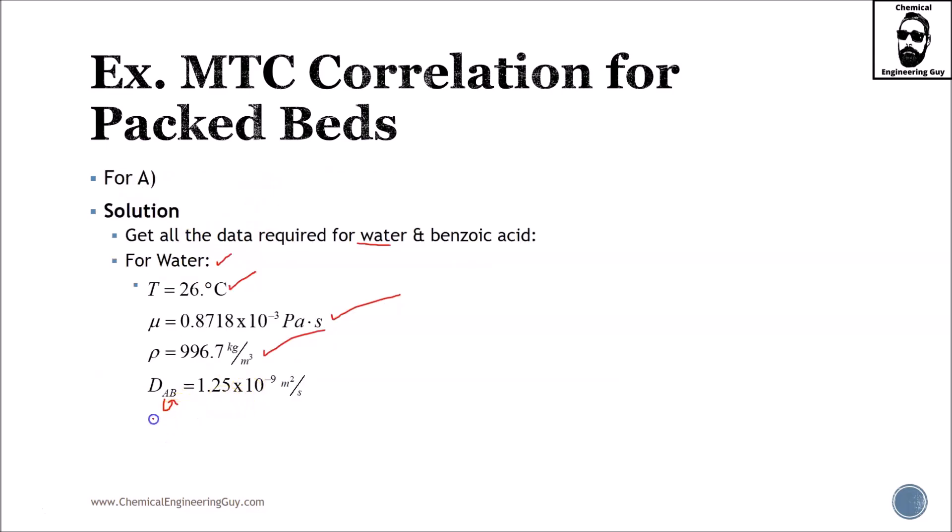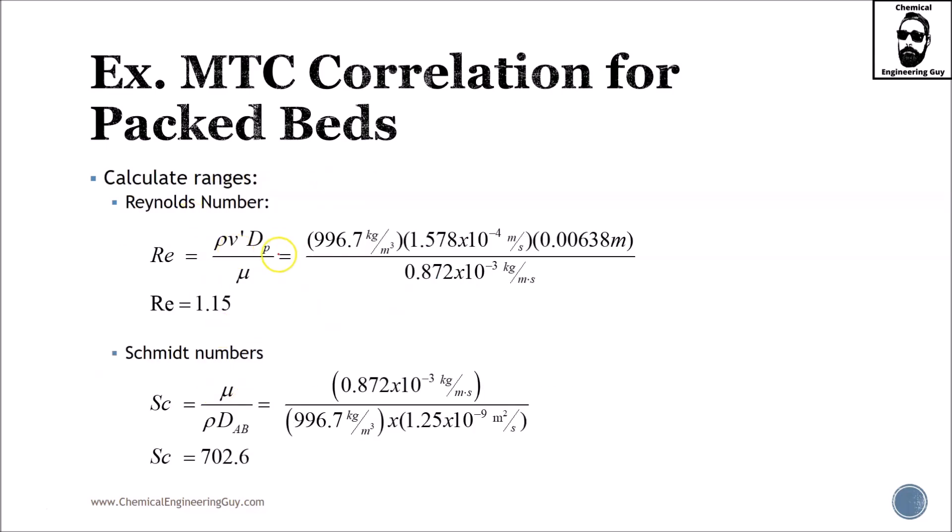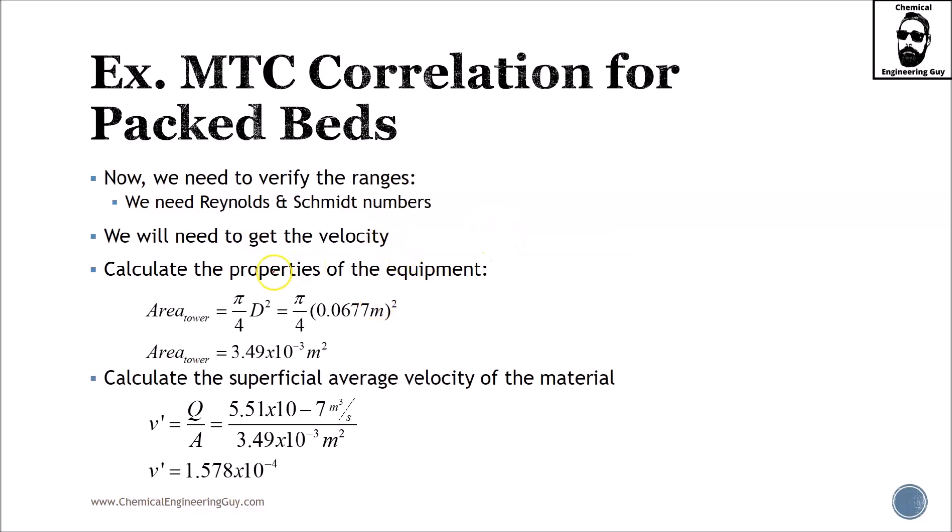Now we need to verify the ranges, Reynolds and Schmidt numbers. For Reynolds, I have everything for Reynolds. I have the density, I have the velocity. Actually, I need to calculate the velocity for Reynolds. But the problem is that for velocity, I got to calculate the area.